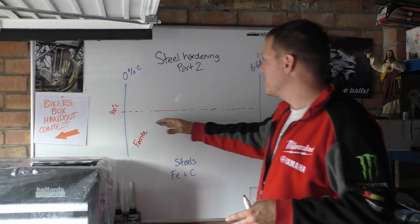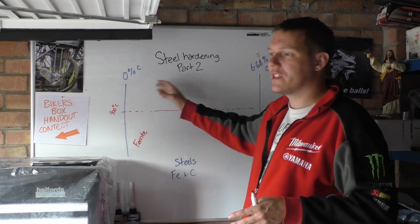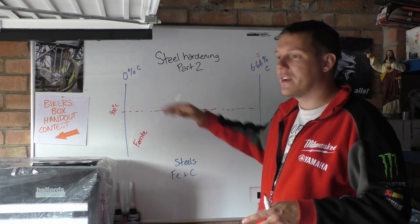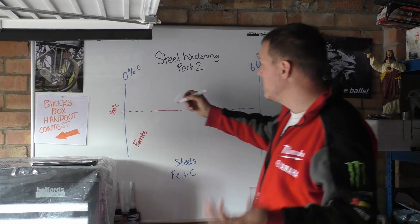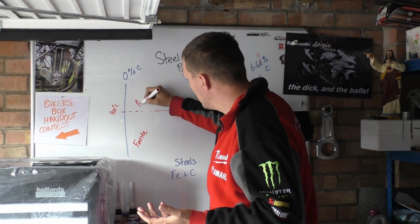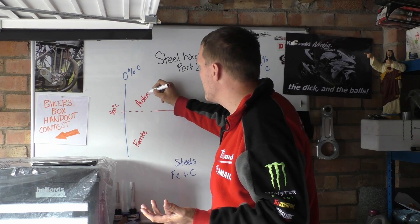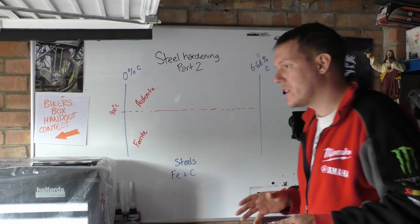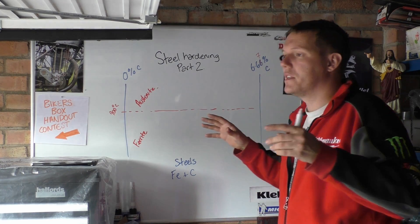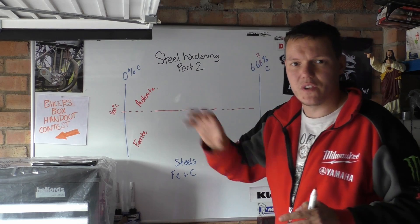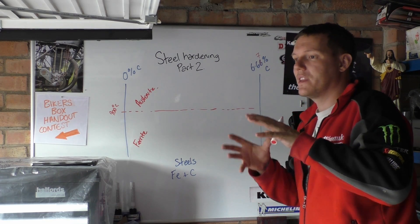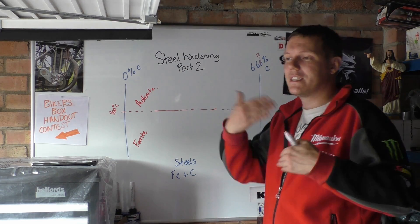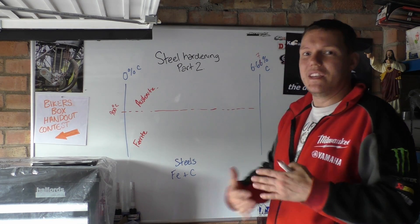What happens is, when you heat this up — there's this weird transition here with alphas and whatever, we will go into that — when you heat up your ferritic steel you basically turn it into austenite. That's basically what you're transferring it into. In the next video we'll cover what this transfer is — it's all about the actual arrangement of the atoms in the crystalline structure.